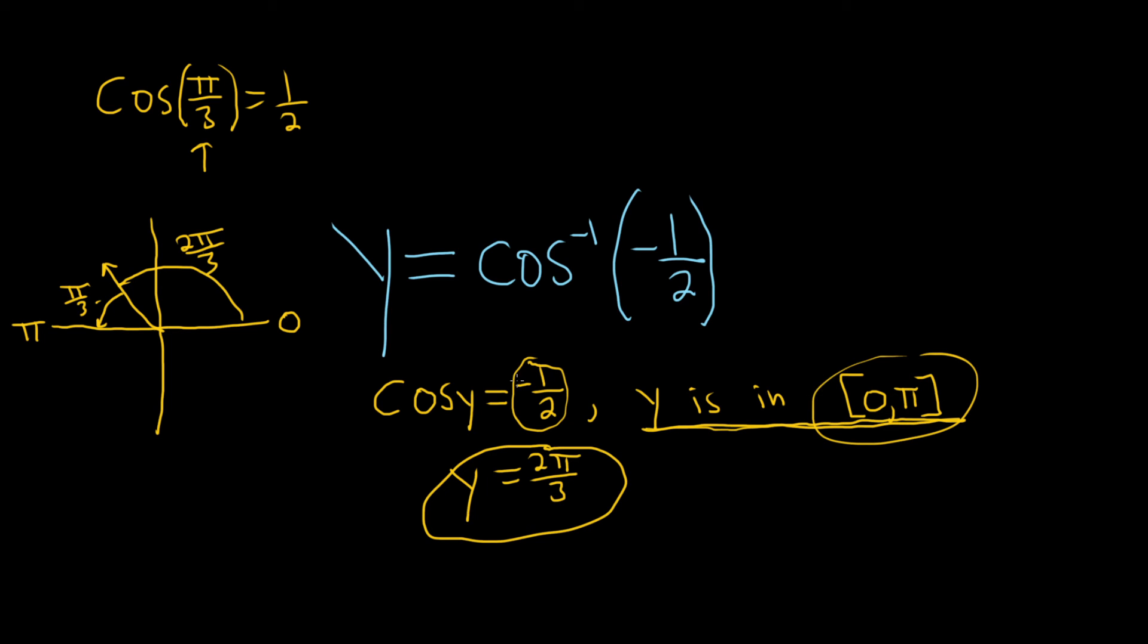Then you say, okay, what's the y that's going to work here? So you've got to think back to trig. What angle gives me 1 half? Well, π over 3. That's from memory. So you know that the trig function values of an angle are the same as the reference angle, except possibly for a sign difference.